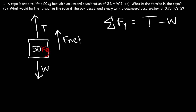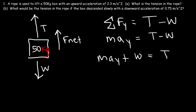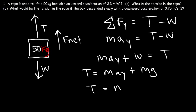Our goal is to find T. The net force is equal to MA. Since the force is in the y direction, the acceleration is in the y direction. Adding W to the other side gives MA plus W equals the tension force. The weight force is simply MG, so if we factor out M, the tension force equals the mass times G plus the vertical acceleration. This is the equation we need.